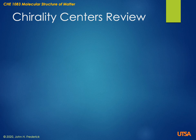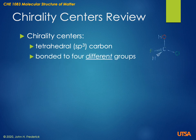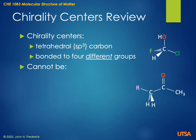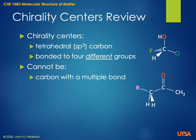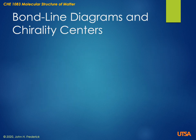Let's start by reviewing what we know about chirality centers. We know that they have to be tetrahedral carbons that are bonded to four different groups. Oftentimes, the easiest way to identify them is to identify what they aren't. They cannot be a carbon with a multiple bond. They cannot be a terminal methyl carbon, and they can't be a carbon that's bonded to two of the same groups. This gives us clues as to how we can recognize a chirality center in a molecule.